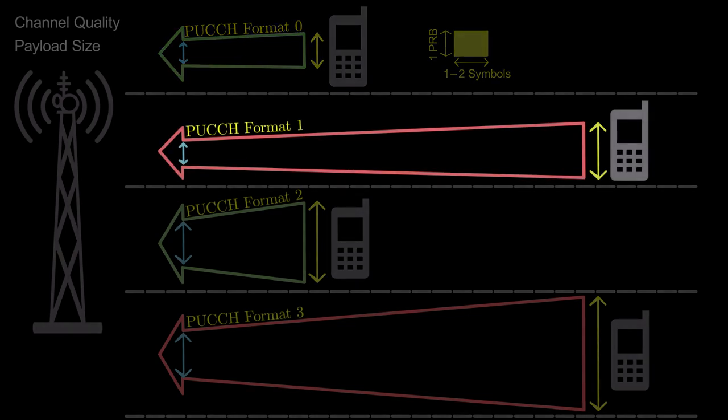Similarly, PUCCH format 1 is allocated using 1 PRB over 4 to 14 symbols depending on the channel condition and payload size.